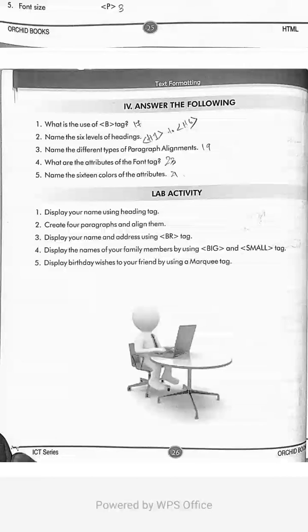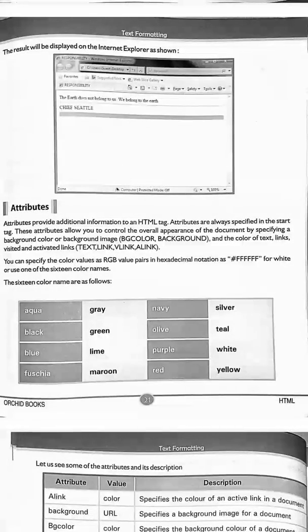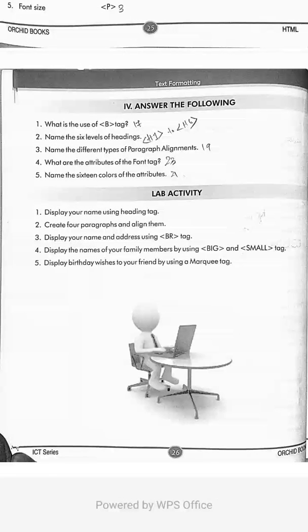Next, name the 16 colors of the attributes — refer to page number 21. The 16 color names are given in a table there. No need to memorize it; just mark it in your book and refer to it if asked in the exam. So thank you students, we have finished this chapter. We will see chapter 4 on lists in the next class.